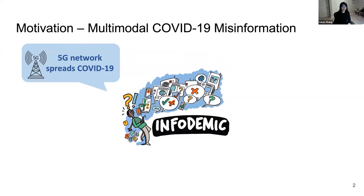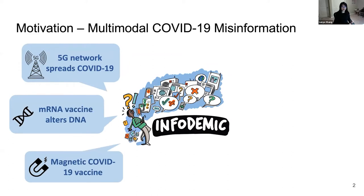There also exists many misinformation related to the COVID vaccine, such as the claim that the mRNA vaccine can alter our human DNA, or that the vaccine contains some magnetic elements that can make our human body become magnetic. All this vaccine-related misinformation will greatly increase people's hesitancy of getting vaccinated.